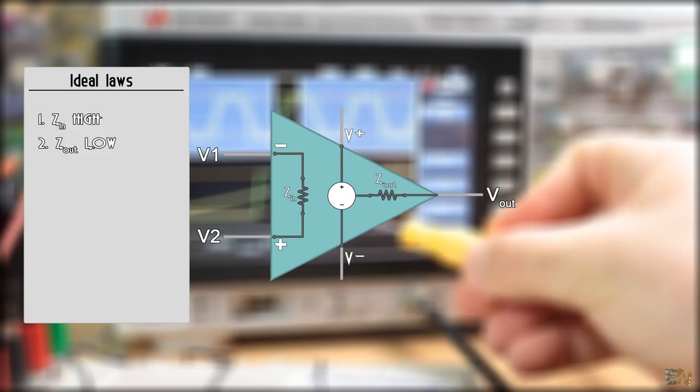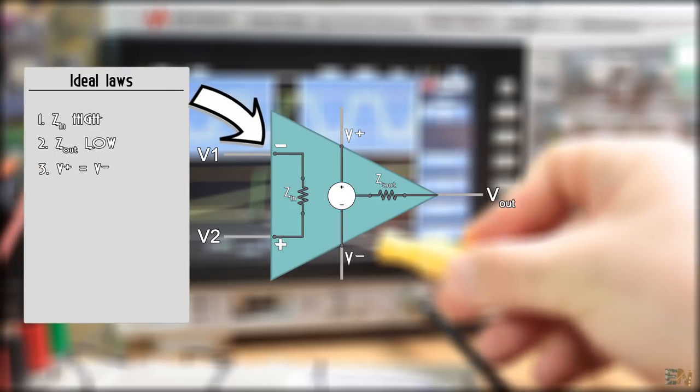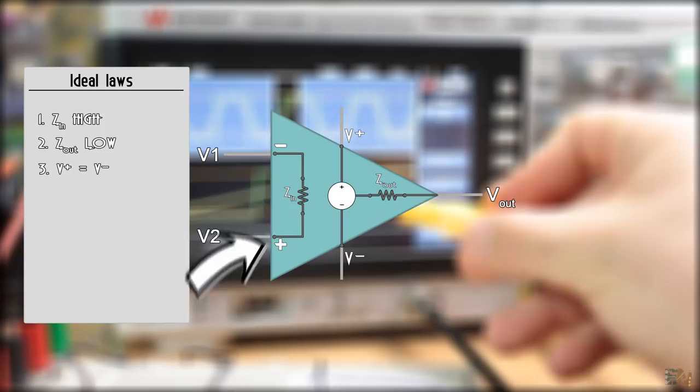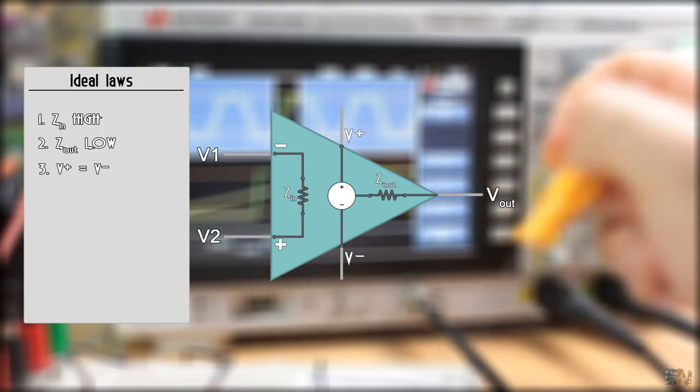Third ideal law and very important one is that the voltage on the positive and negative input will always be the same, or at least the op-amp will try that, even if it won't succeed.